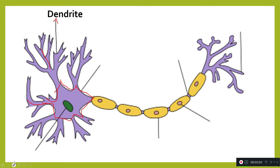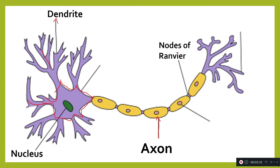Here you can see the nucleus. Now, regarding the axon: a long extension originates from the cell body — this is called the axon. A thin layer encloses the axon called the neurolema.